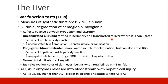When unconjugated bilirubin levels are elevated, this reflects pre-hepatic dysfunction, increased production or decreased hepatic uptake or conjugation. Conjugated or direct bilirubin is more water-soluble in order to be eliminated, and it can also cross the blood-brain barrier. When this is elevated, it can reflect hepatic or post-hepatic dysfunction. We see increased conjugated bilirubin in patients with hepatitis, certain drugs, alcohol abuse, cirrhosis, and biliary obstruction.